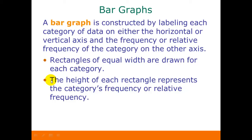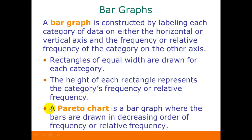We have a slightly different type of graph called a Pareto chart. It's just a bar graph where we draw the bars in decreasing order of frequency. In other words, the category with the highest frequency is going to be on the left, decreasing down to the category with the lowest frequency on the right end of the graph.